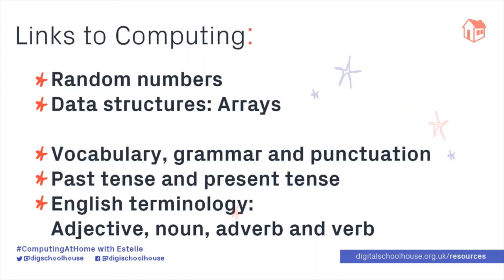Let's look at what we've learnt. We've learnt about random numbers and how they can be used to select items from an array. We've also looked at data structures — we've looked at an array, which is a fixed-length list. In our example, all of our arrays were fixed to six items. We've also looked at some English skills: vocabulary, grammar and punctuation, because you had to think about whether your story made sense. We've thought about past tense and present tense, and we've used English terminology — adjectives, nouns, adverbs and verbs.